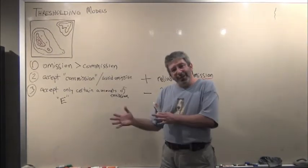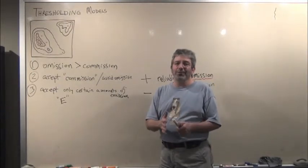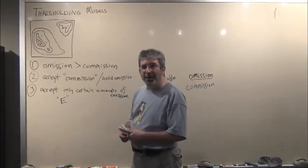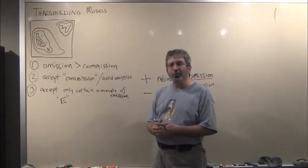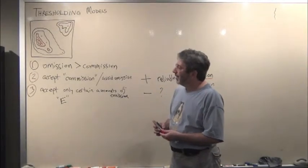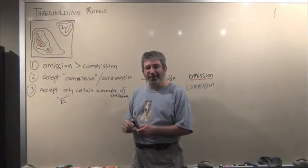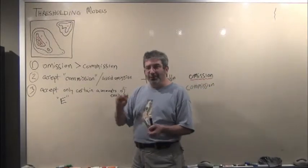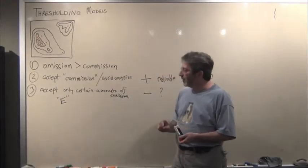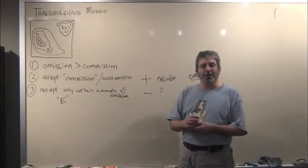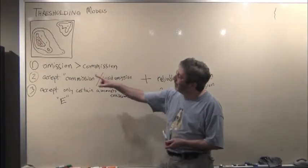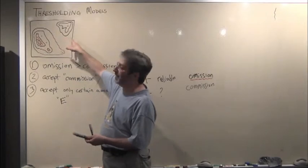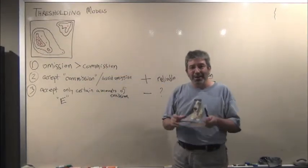E in the best cases will be zero, and in the worst cases maybe five or 10%. This is a topic for another teaching module, essentially how do we assess error in our presence data. This is something you have to think about when you're developing these thresholding approaches. E is the proportion of your occurrence data that are likely or expected to include some error that could essentially move one of these points out of the appropriate area and into a less suitable area erroneously.